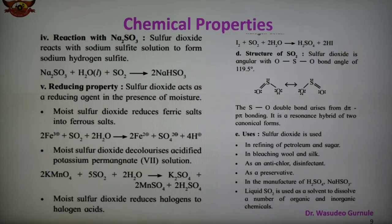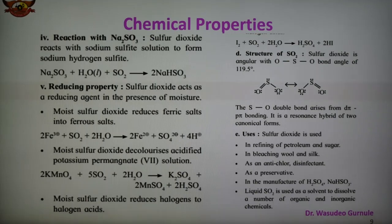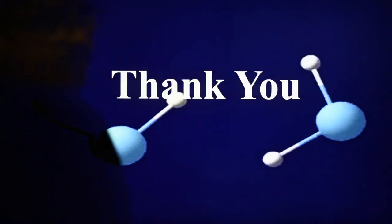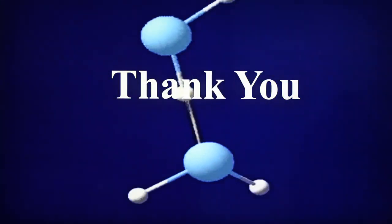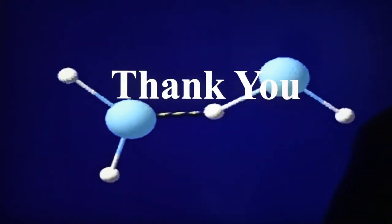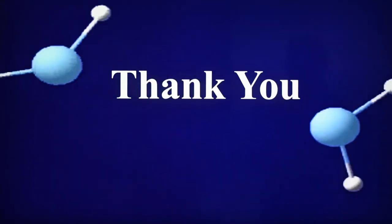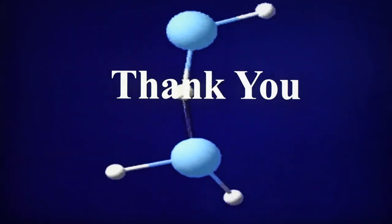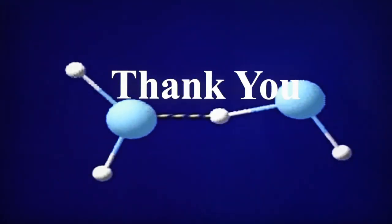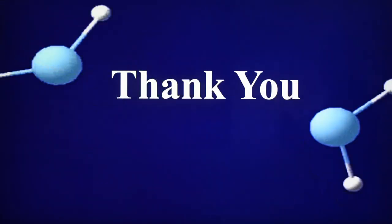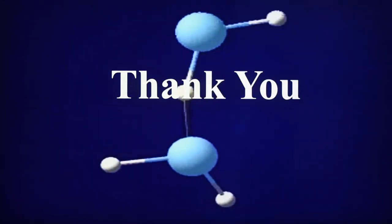We have discussed the types of oxides and the important compound ozone — its preparation, properties and uses — and also the compound of sulphur, sulphur dioxide. Today we discussed simple oxides, types of oxide, ozone, and sulphur dioxide. The preparation, chemical properties, and uses are very important from an examination point of view. Today we stop here and the remaining part will be discussed in the next video. Thank you.